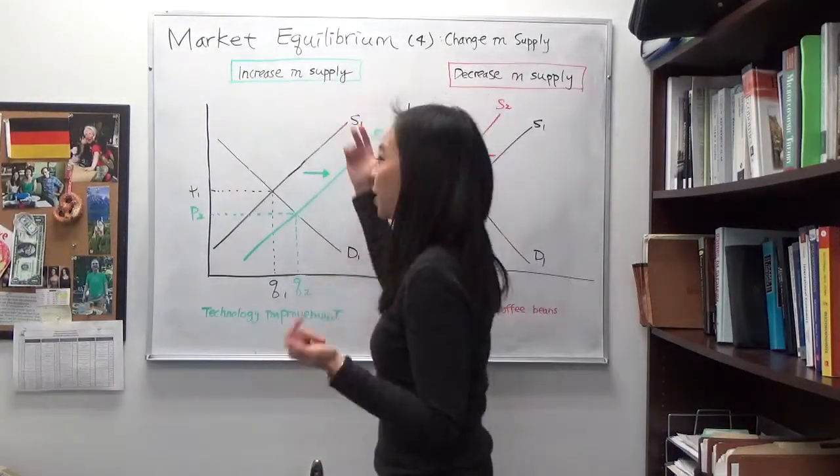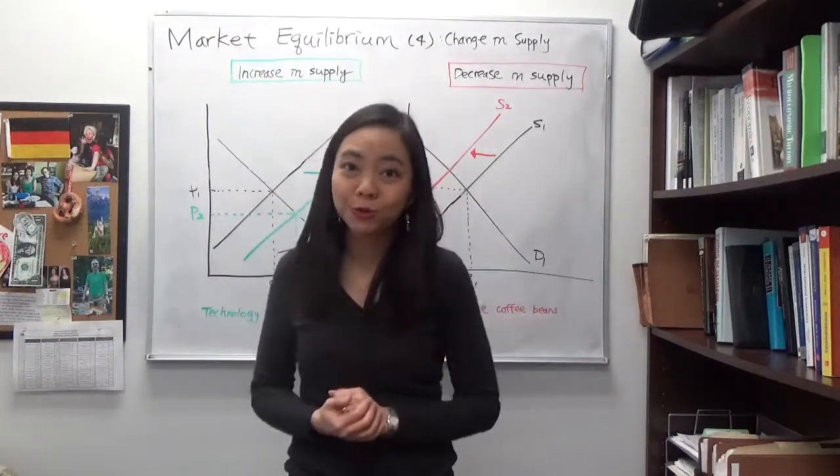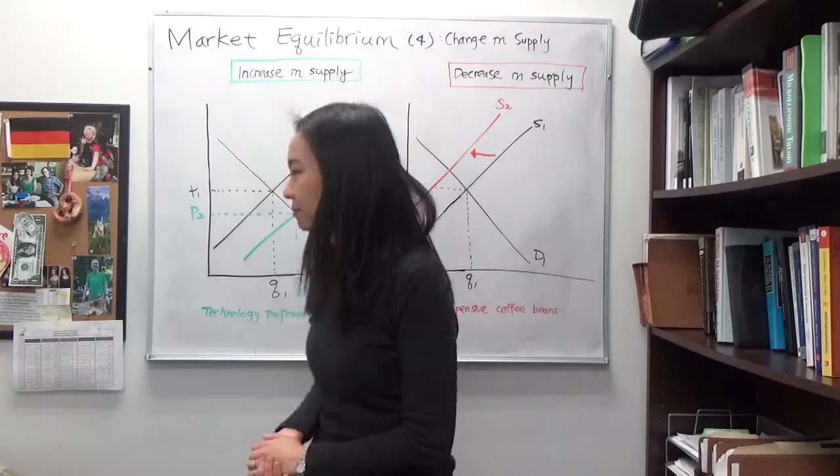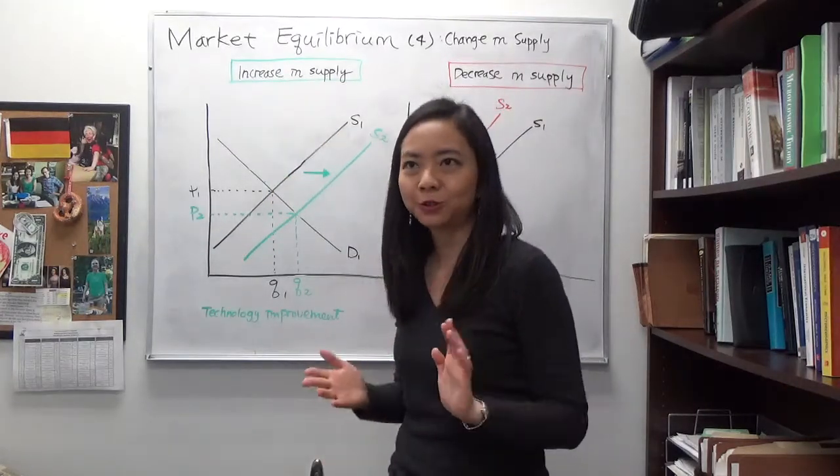In particular, what will happen to our market equilibrium when there is a change in supply? I'm going to use the example of cappuccino that they sell in coffee houses.